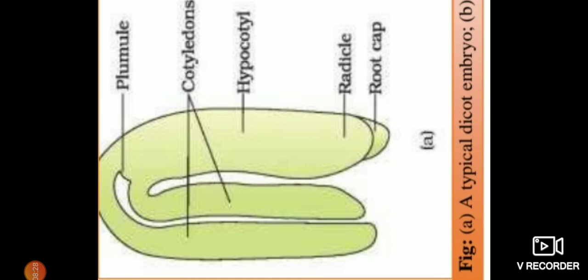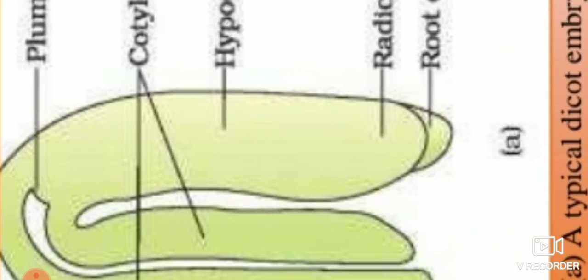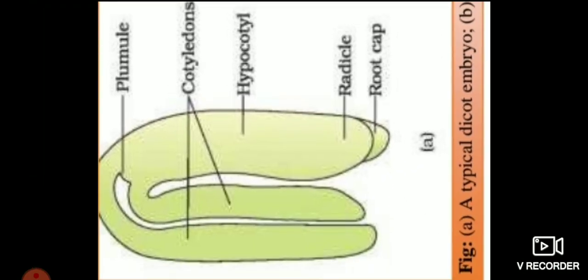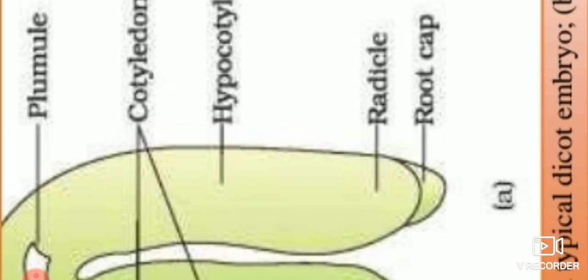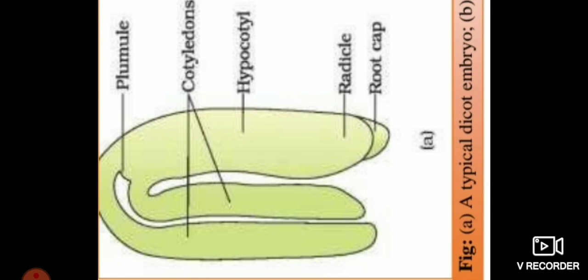This is the diagram of a typical dicot embryo. The portion of the embryonal axis above the cotyledon is the epicotyl, turning into the plumule. The portion below the cotyledon is the hypocotyl, turning into the radicle, which is covered by the root cap. For a theory question on dicot embryo structure, draw this diagram and write this information.